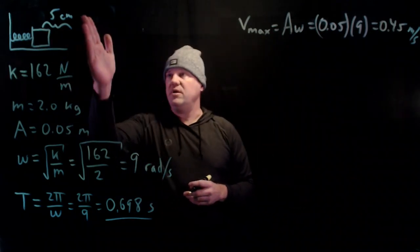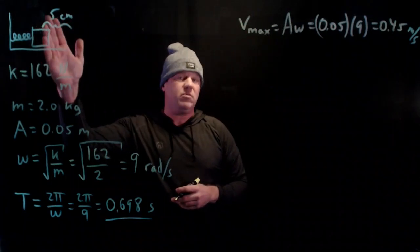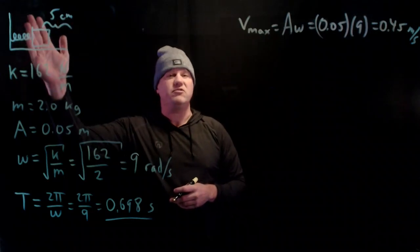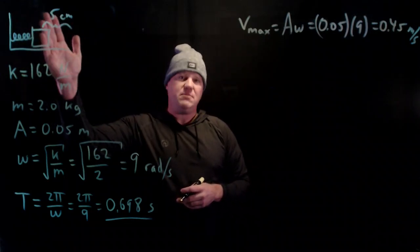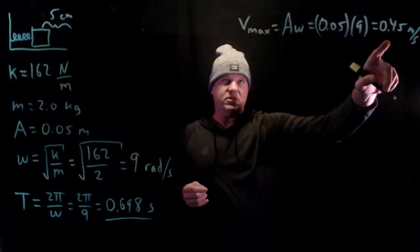When we pull it and let go, as it passes through equilibrium, it's going to be moving to the left at 0.45 meters per second. It's going to go all the way to the other side 5 centimeters from equilibrium, bounce back, and as it passes through equilibrium on its way to the right, it will also have this speed.